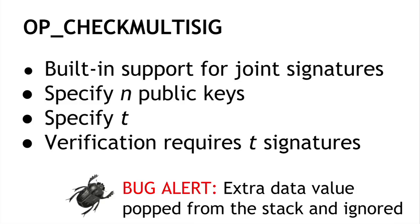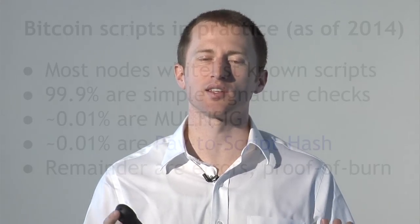There's an important bug here — a gotcha that's been there since the beginning. In the original implementation, the CHECK_MULTISIG instruction actually pops an extra data value off the stack and ignores it. This is a quirk of the Bitcoin language that you have to deal with by putting an extra dummy variable onto the stack. At this point it's considered a feature in Bitcoin — the costs of removing it are much higher than the damage it causes, so this is just a fun bug that everybody in the Bitcoin community gets to live with.